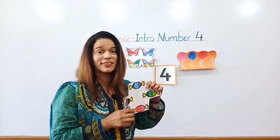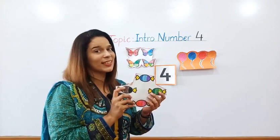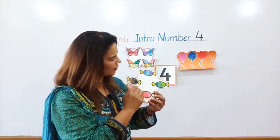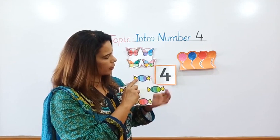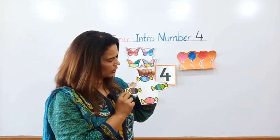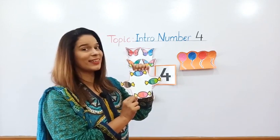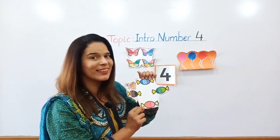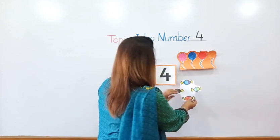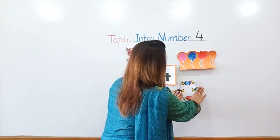Now see what is this? Candies. Let's count how many candies are here. One, two, three, four. How many candies? Four candies. Now I will paste four candies here with number four.